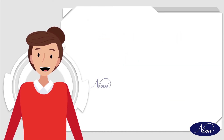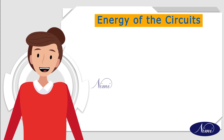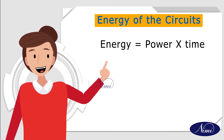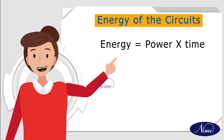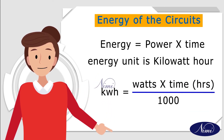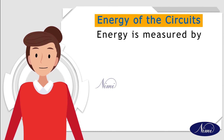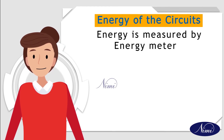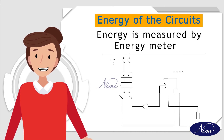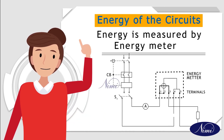Next is the energy of the circuit. Energy means the product of power and time. Its unit is kilowatt-hour. Normally, power is measured by an energy meter. The circuit diagram to measure the energy of a circuit is shown in the figure.